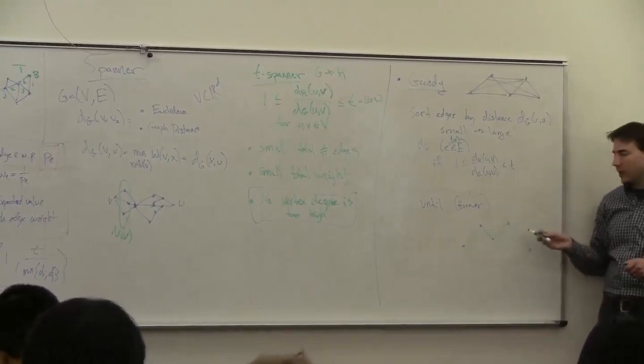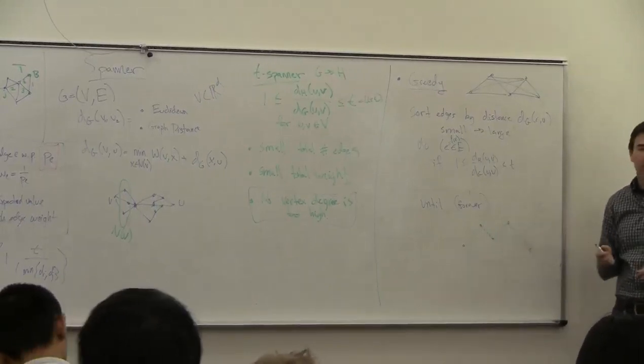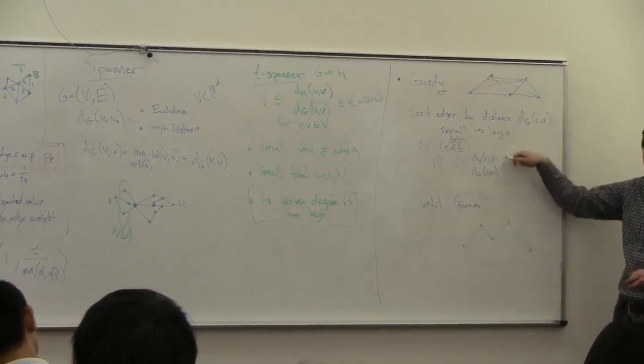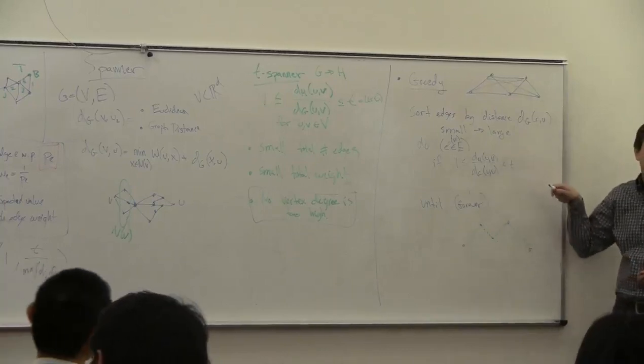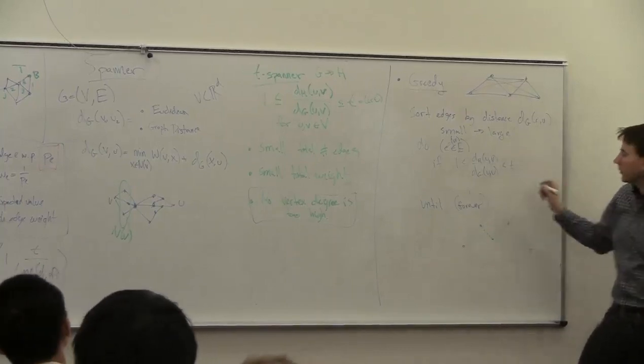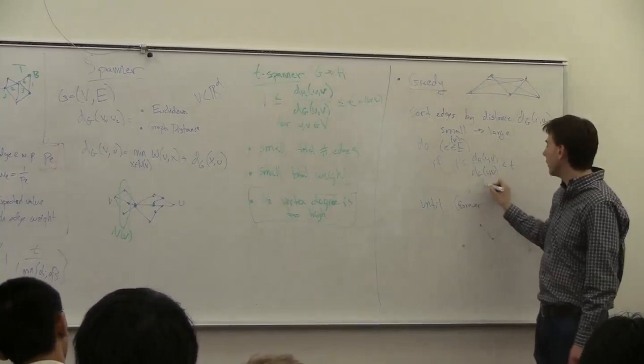So you simply add edges from shortest to longest, and add the edge if this constraint is not satisfied — meaning the current graph distance is more than T times the direct edge distance. If the constraint is not satisfied, then add the edge.